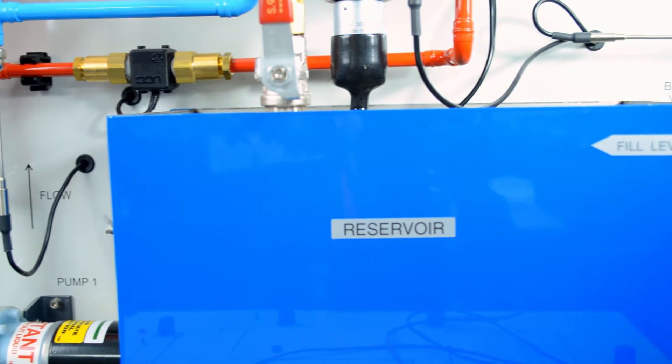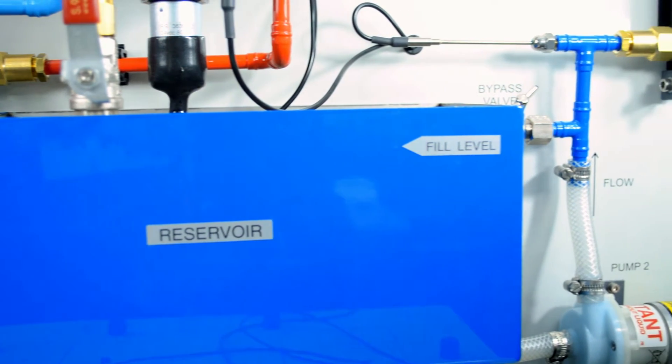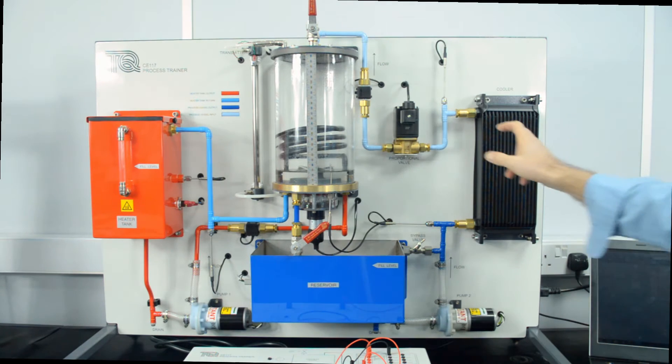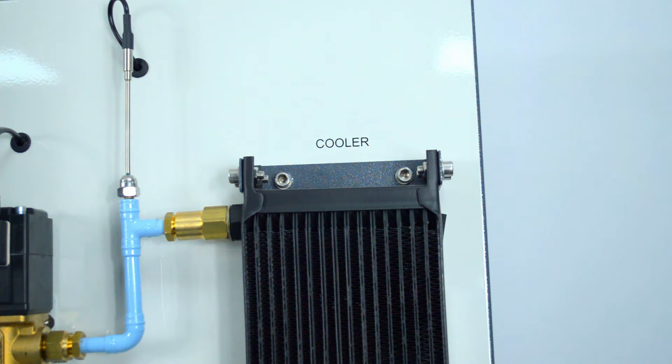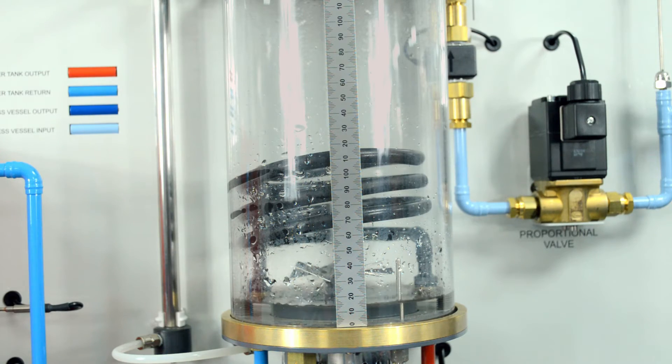The other loop is a process and cooling loop which begins in the reservoir through the circulation pump. Fluid can be cooled through the cooling radiator and fan, flow controlled with a proportional valve, before entering the process vessel.